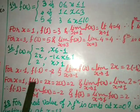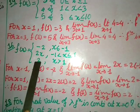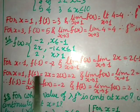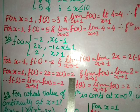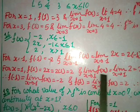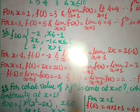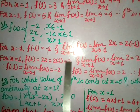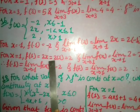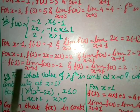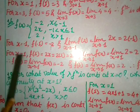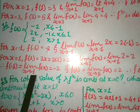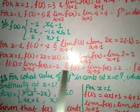For x = 1: f(1) = 2×1 = 2 (second function). lim(x→1) f(x) = 2 (third function). Both answers are 2. Since f(−1) = lim(x→−1) f(x) = −2 and f(1) = lim(x→1) f(x) = 2, the function is continuous at both x = −1 and x = 1 — continuous at all points.